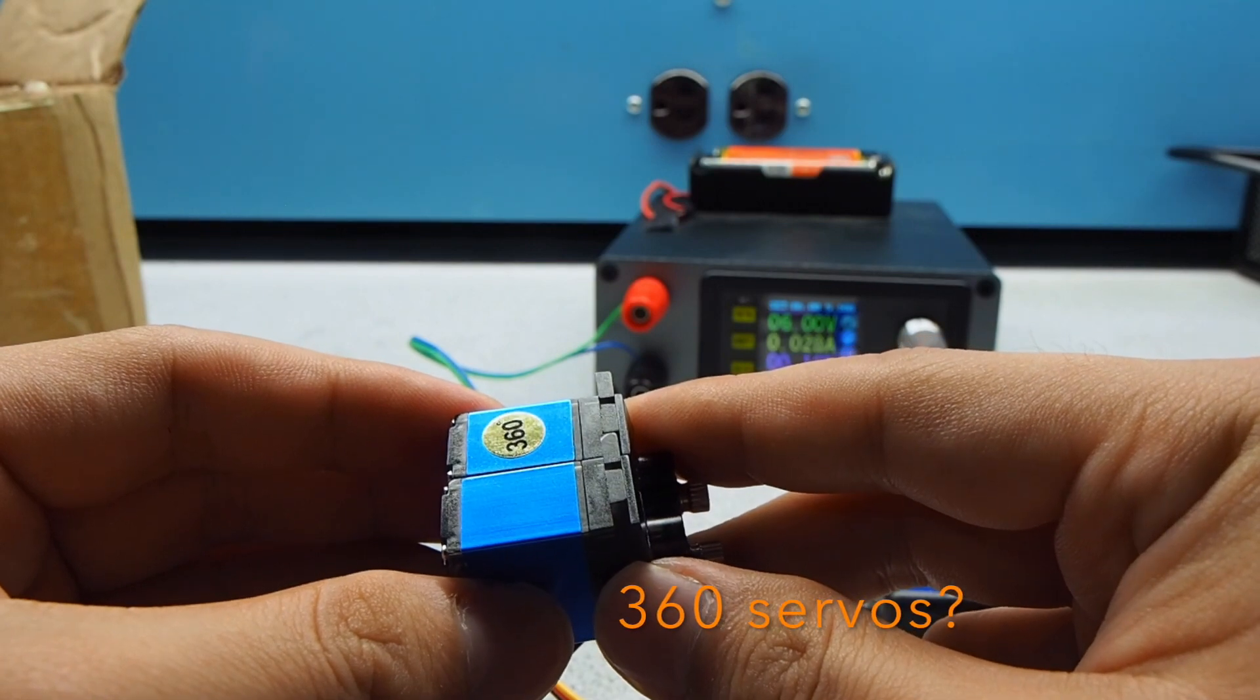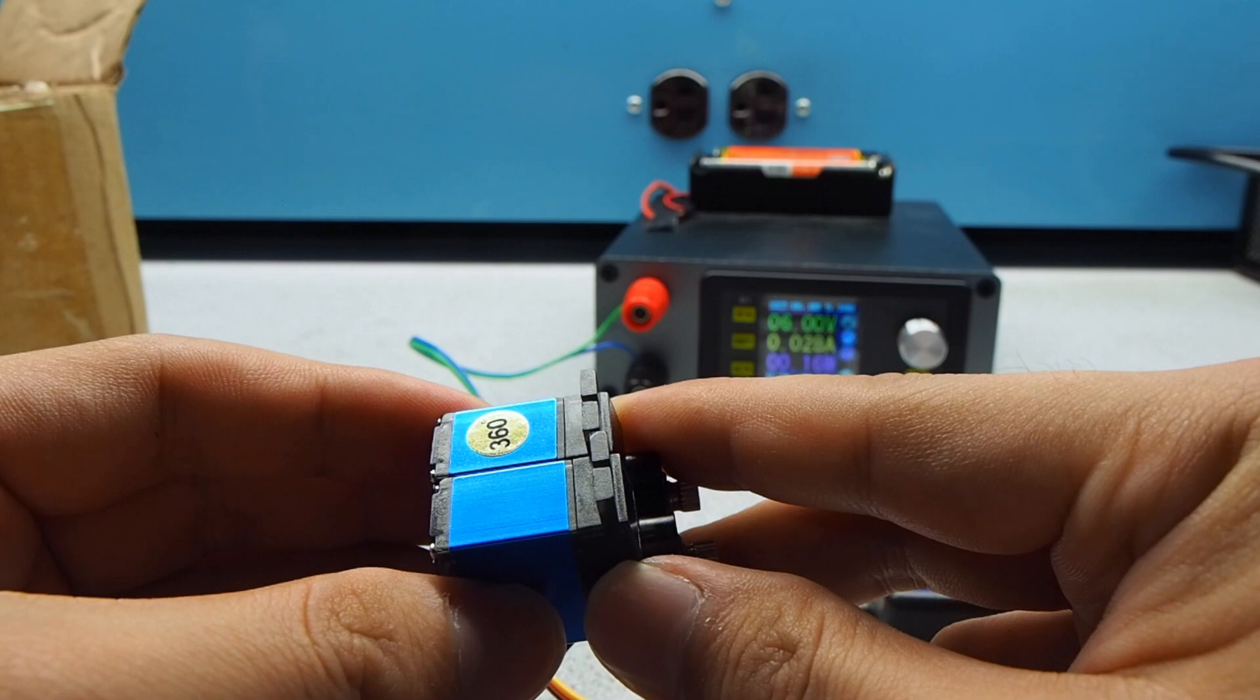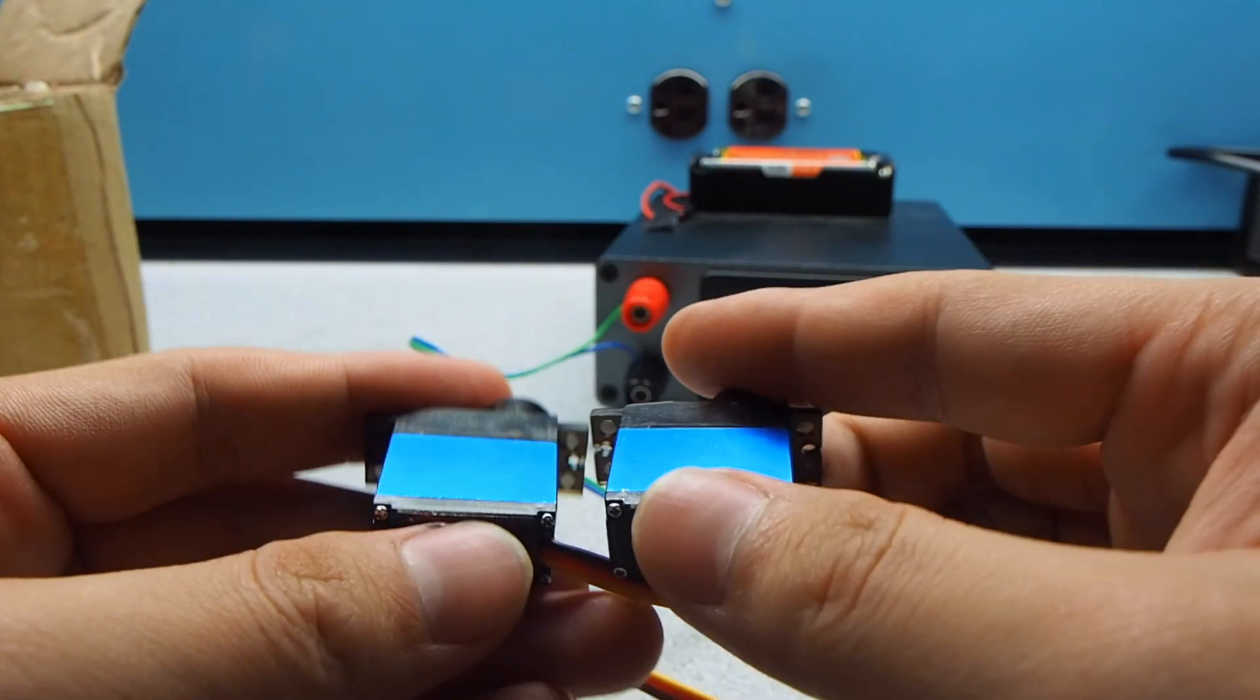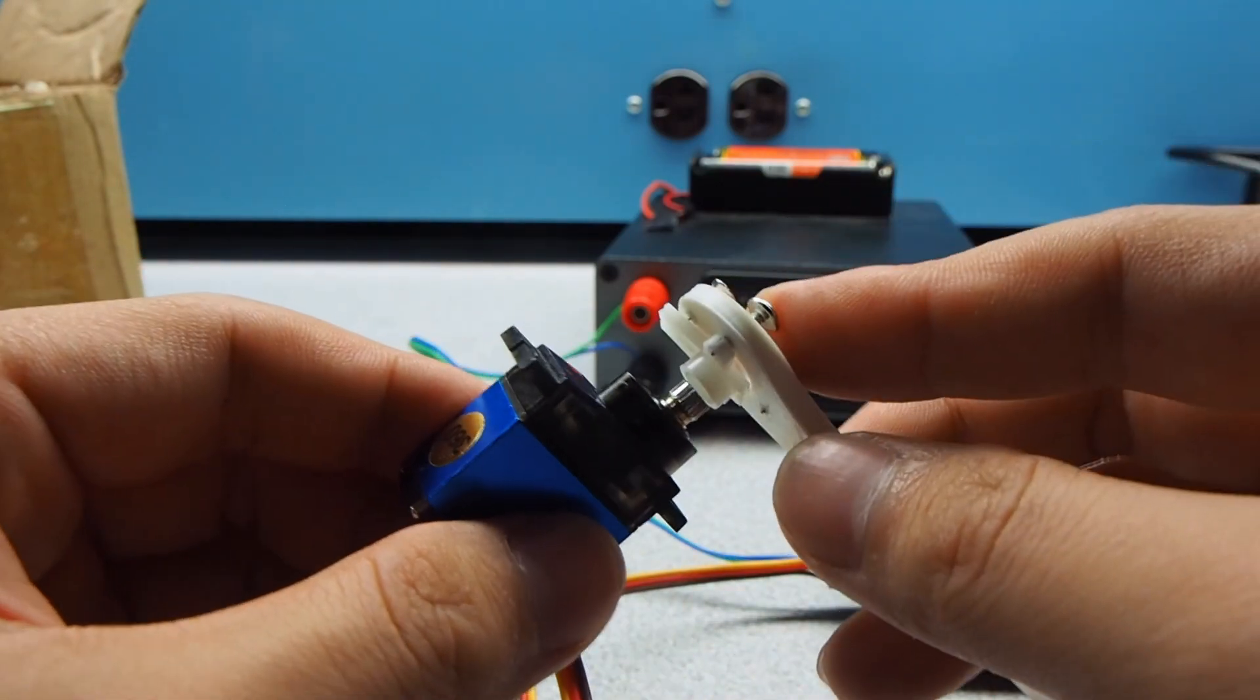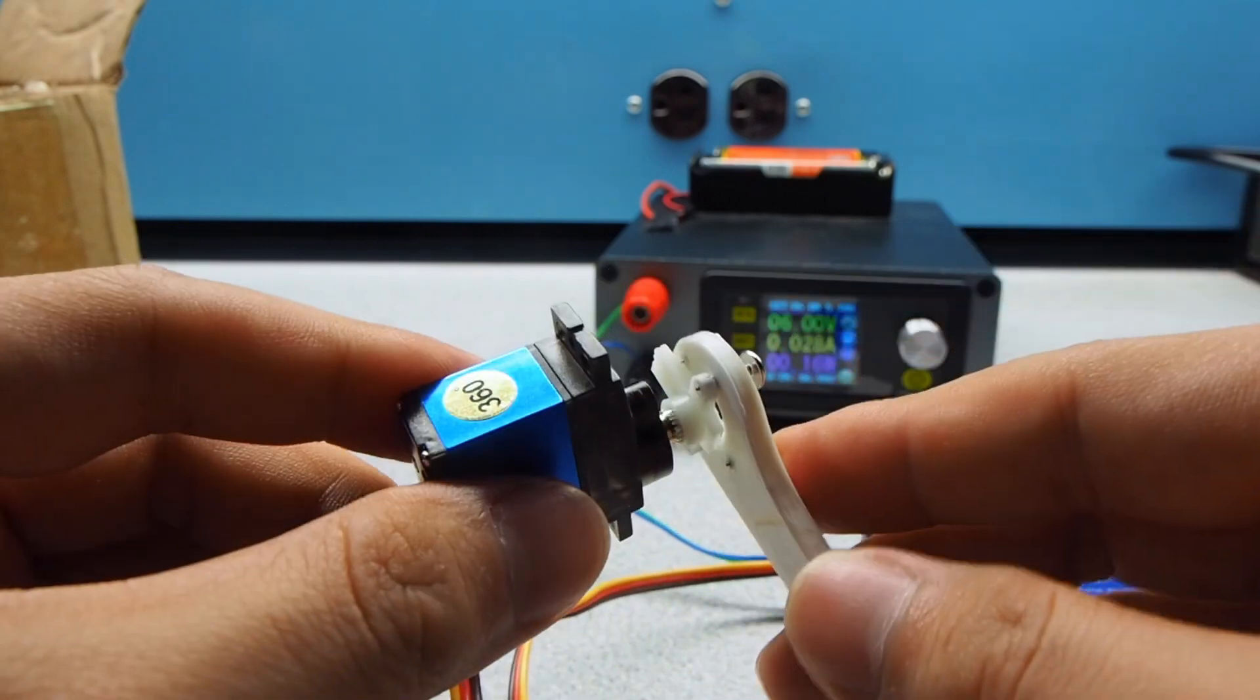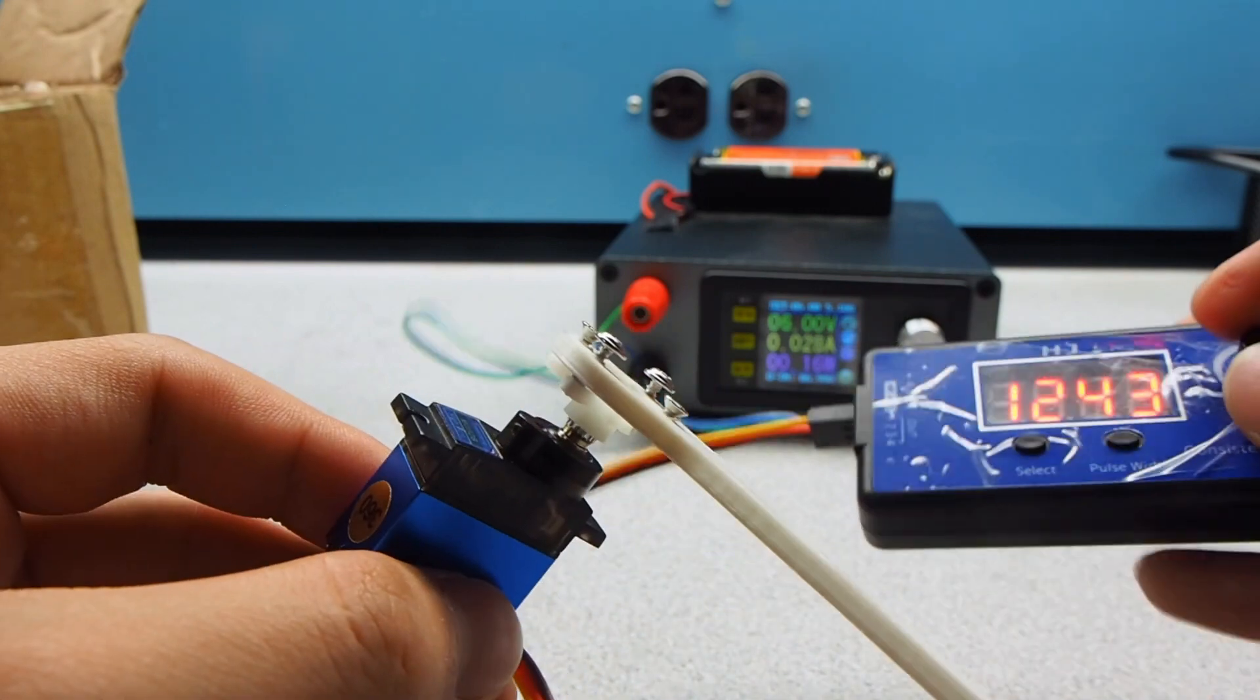In the end, I want to show you this special 360 degree continuous rotation servo. It looks identical to the regular servo, but there is some modification to make it continuously rotate. Although this 360 is not all controllable. You will see what I mean.